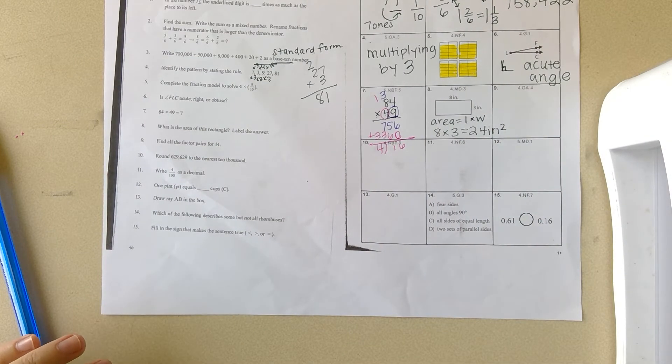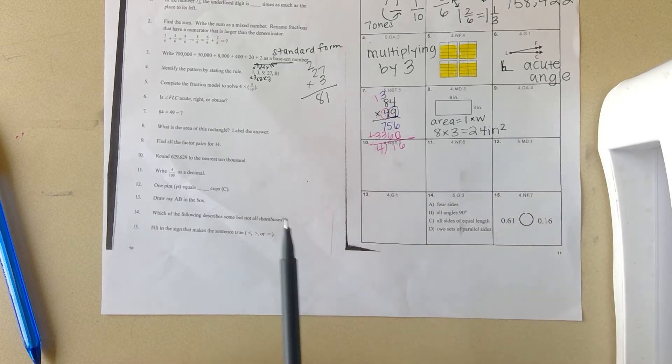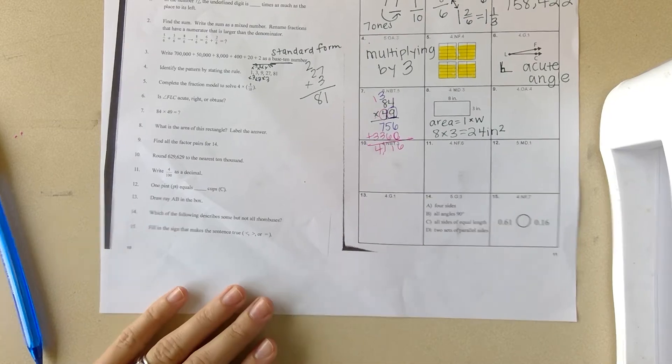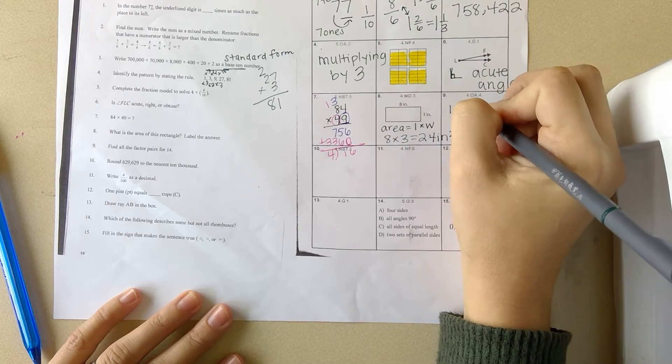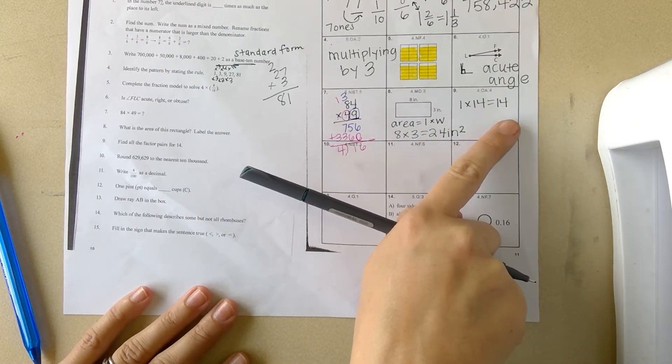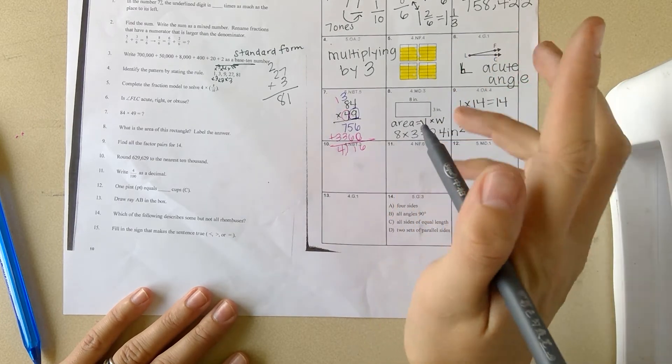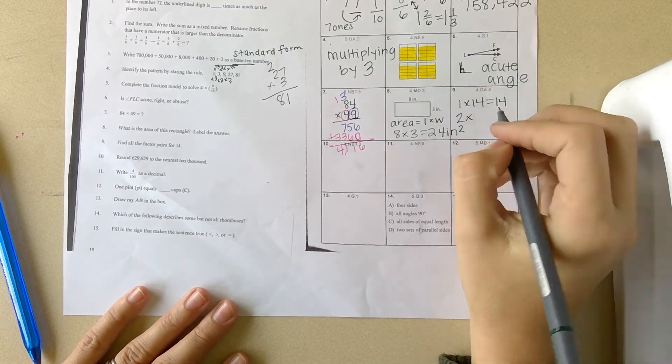Number nine: find all of the factor pairs for 14. What are all of the numbers that you can multiply together to get 14? When you are looking at 14, what numbers can you multiply together? We know 1 and itself can get you that. One times 14 equals 14. And 14 ends in an even number, and we know two can be multiplied by a number to get even numbers.